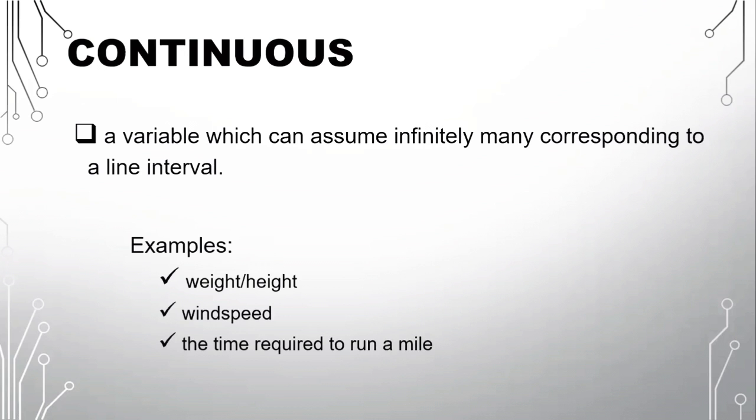So the difference between continuous and discrete: discrete is countable, while continuous is uncountable or we tend to measure it. So in continuous, we measure it, like height and weight, it's measured by kilograms and in centimeters or meters. The wind speed, we don't count it, right? So it is measured. So always remember, discrete is countable, and continuous is measurable.